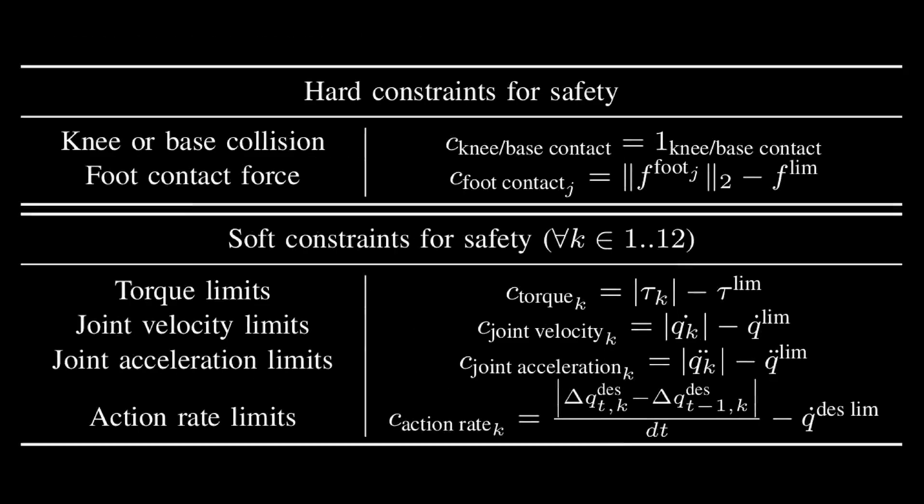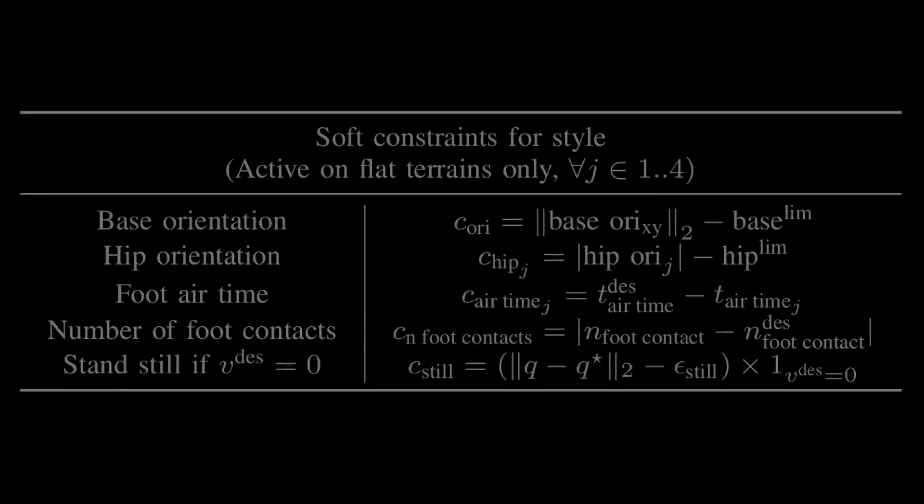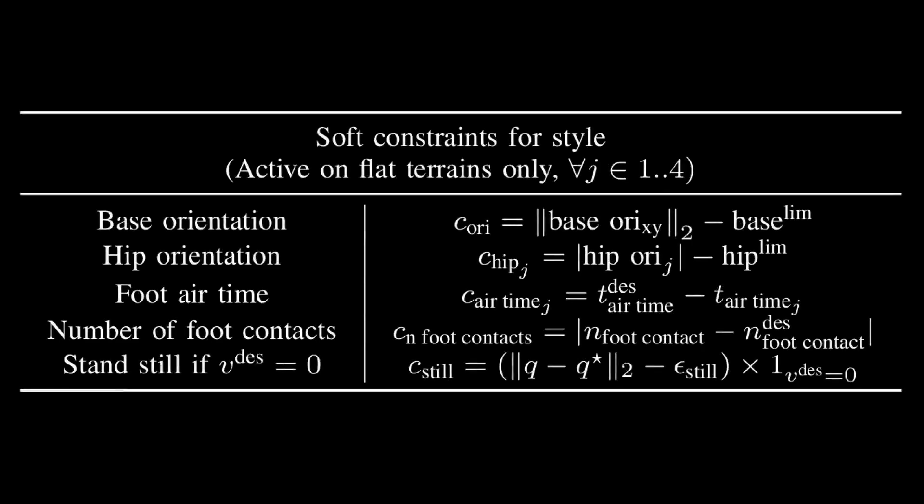We employ constraints, such as limiting the torque applied to each joint or avoiding contacts between the terrain and the base of the robot, to ensure safe policy transfer to the real robot. We also design constraints to enforce a specific walking style on flat surfaces.